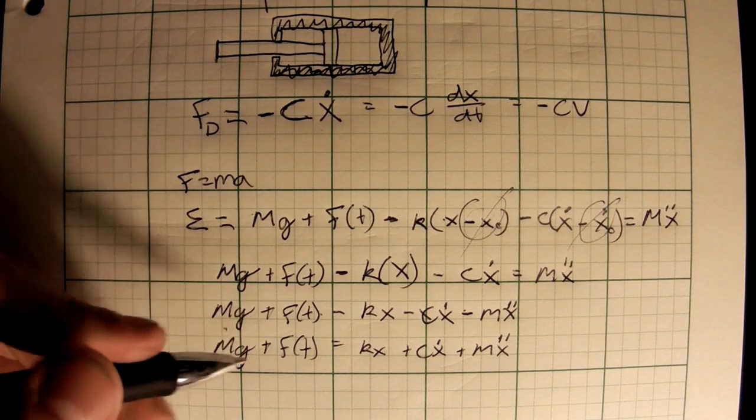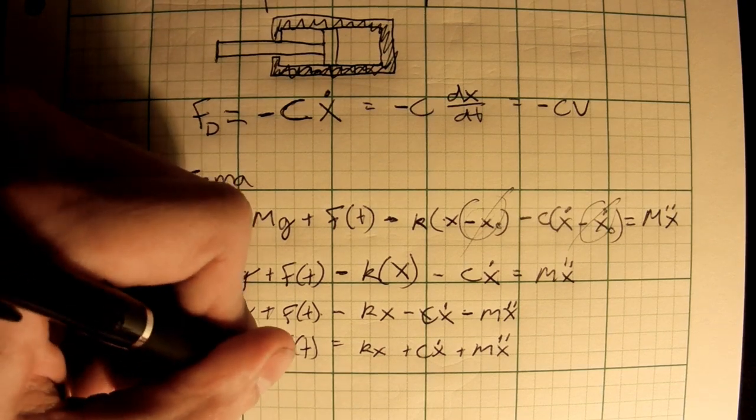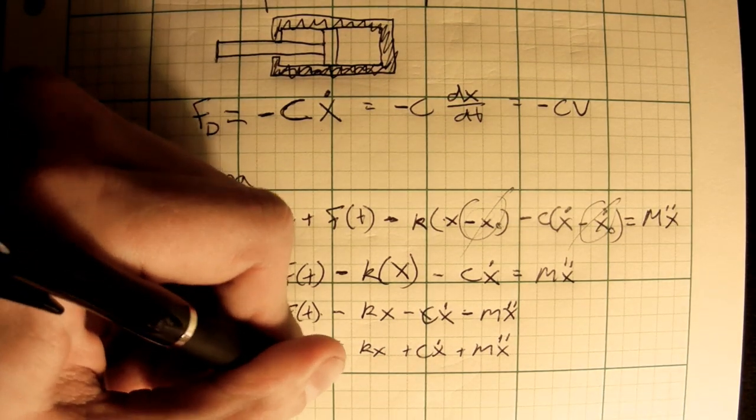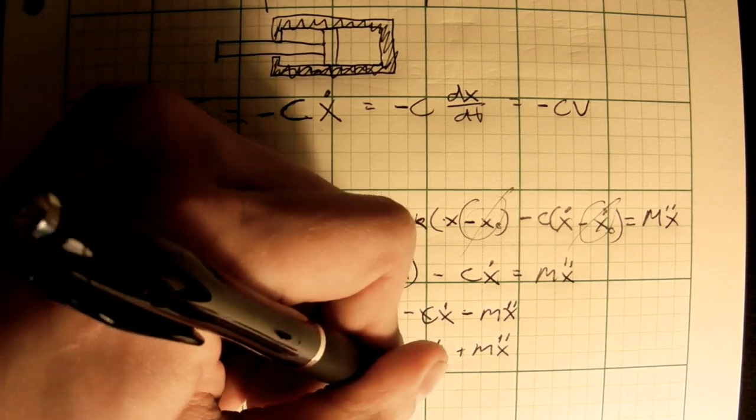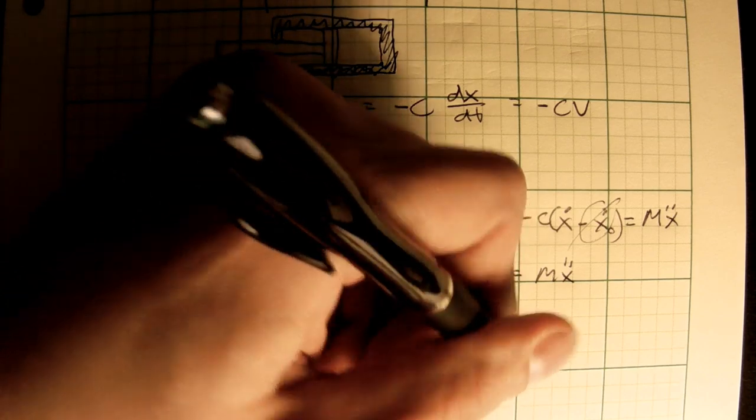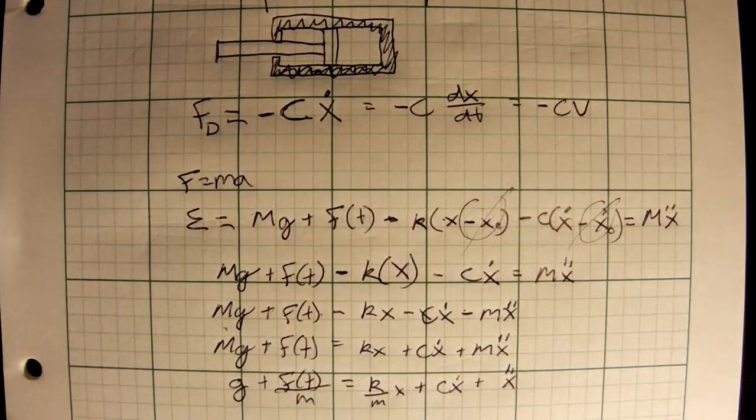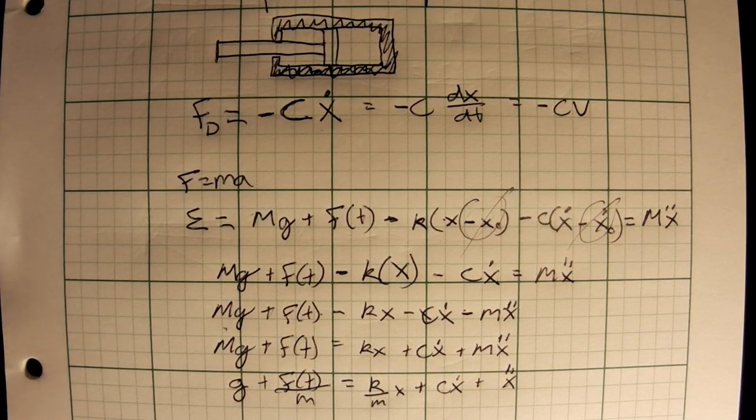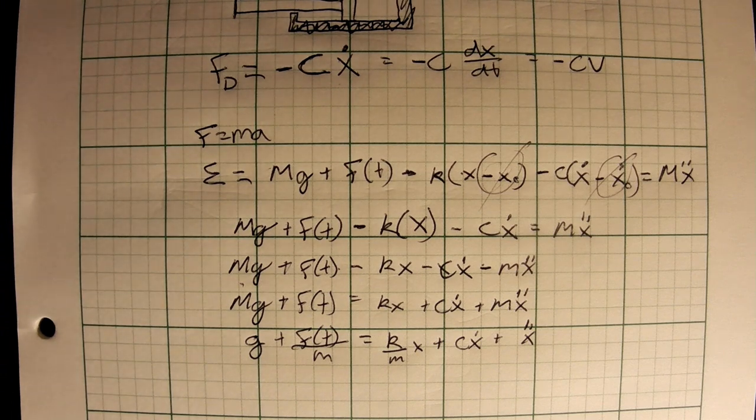It's starting to look a lot like a differential equation now and then we can just go ahead and divide the entire thing by the mass. So we end up with g plus f of t over m is equal to k over m times x plus c over m times x dot plus x double dot. And there we go. What we have here is a second order linear differential equation. Next time we will begin to look at different methods to actually begin to solve these things and get something useful out of it.